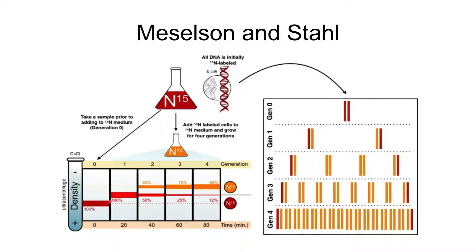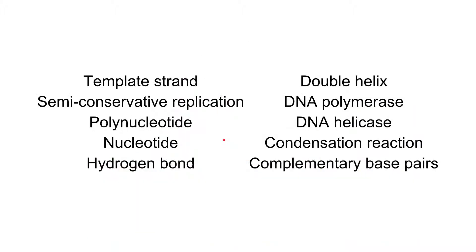To recap: at generation zero, all DNA is heavy. After one generation on light nitrogen, all DNA is hybrid. After the second generation, 50% is hybrid and 50% is light. After the third generation, it is 25% hybrid and 75% light, continuing into further generations in the same pattern.